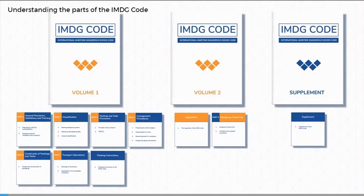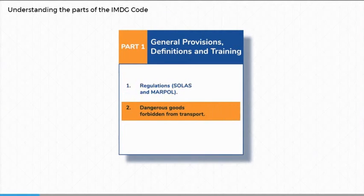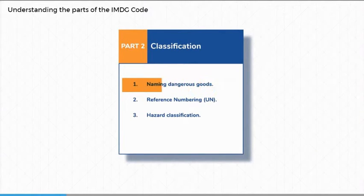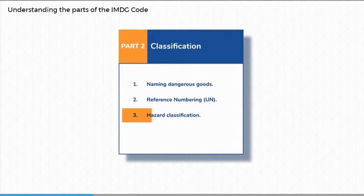Now that we know what is included in the IMDG code, let's take a closer look at each of the different parts relevant to transport of dangerous goods by sea. Part 1 outlines the relevant international regulations and defines any substance that is forbidden for transport under the IMDG code. Part 2 deals with how dangerous goods are identified and referenced using a proper shipping name, or PSN, a reference known as UN number, and a packing group that indicates the degree of danger. Part 2 also explains the classification of dangerous goods into the hazard types in more detail.